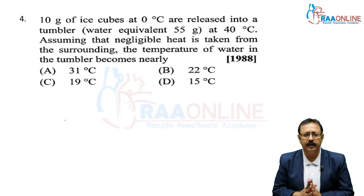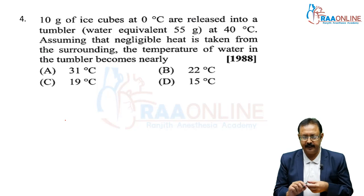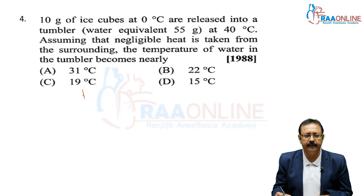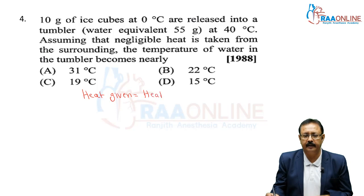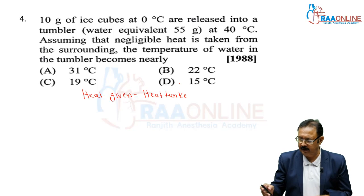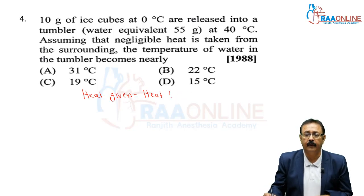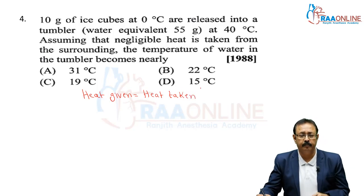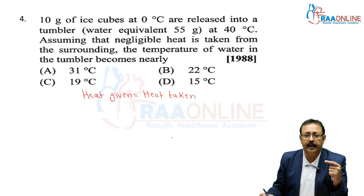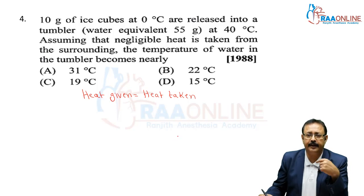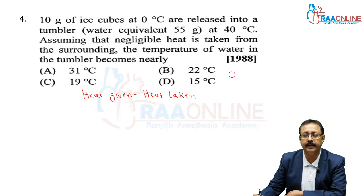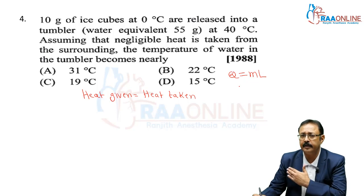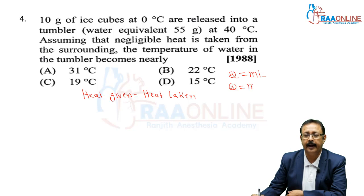The principle of calorimetry states: heat given equals heat taken. When there is a change of state — solid to liquid, liquid to gas, etc. — heat is calculated by Q = ML, where L is the latent heat. When there is no change of state and only temperature changes, we use Q = MsΔθ.